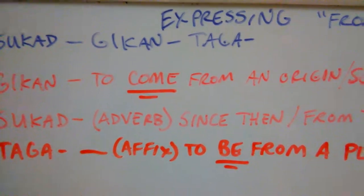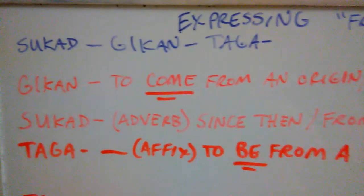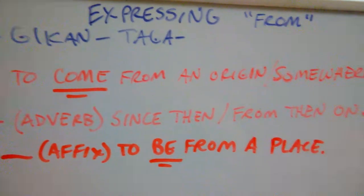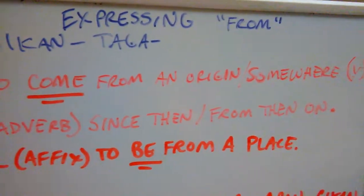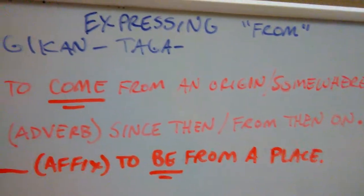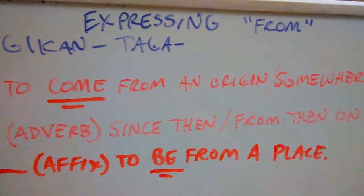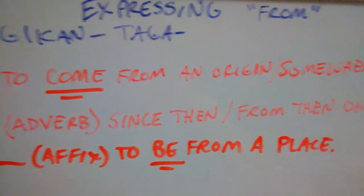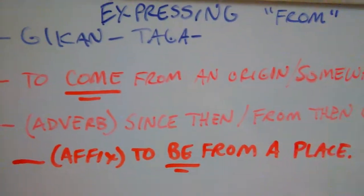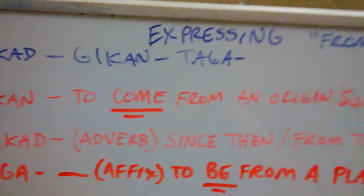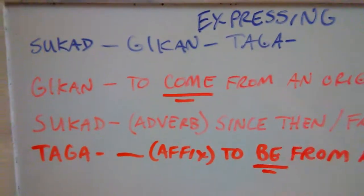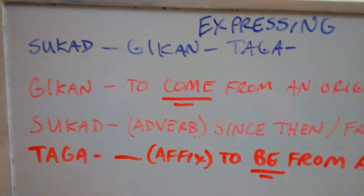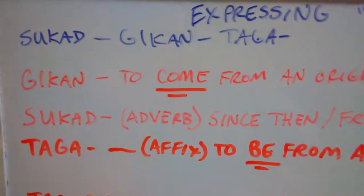Gikan means it's a verb. Gikan actually means to come from a place or somewhere, or an origin. It's a verb. So you're coming from an origin or a place or just somewhere. That's Gikan.